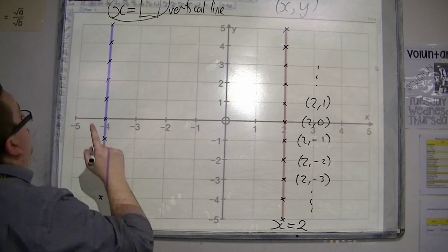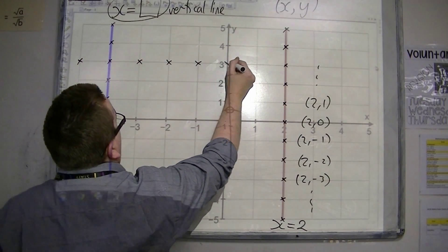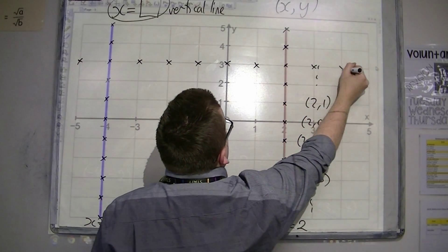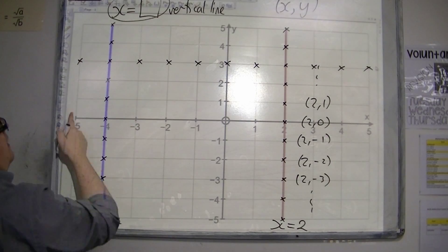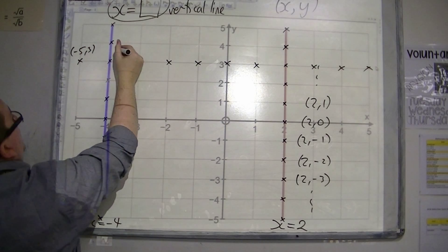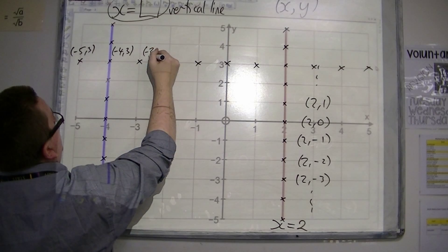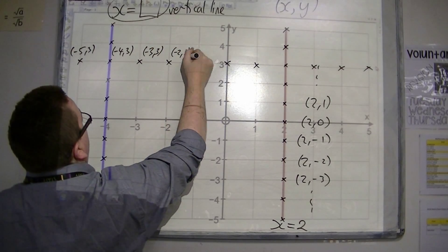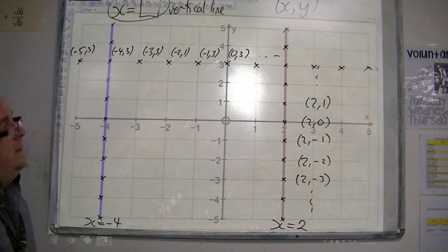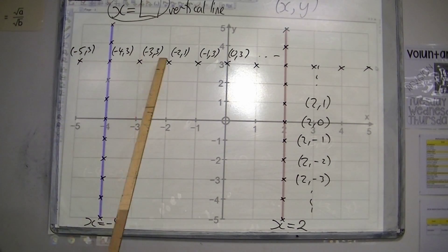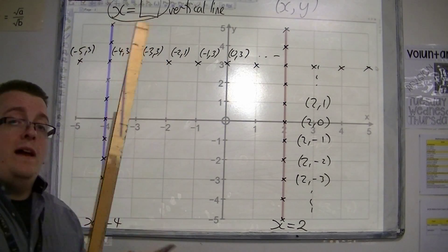Now if I look at a horizontal line — here is a horizontal line. Let's look at the coordinates: minus 5, 3; minus 4, 3; minus 3, 3; minus 2, 3; minus 1, 3; 0, 3; etc. All of these coordinates along this line have exactly the same y coordinate — they all have y coordinate 3.